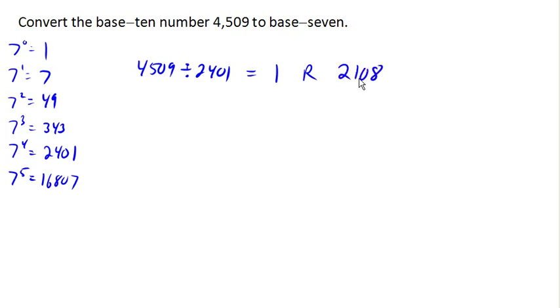So now I'm going to bring down that 2108 and divide it by the next lowest power of 7. So I'm going to divide it by 343. And when I do that, I get, let's see, 6 with a remainder of 50.